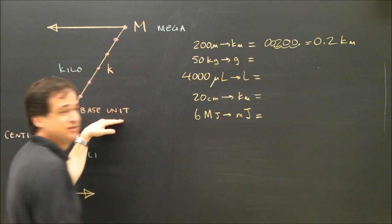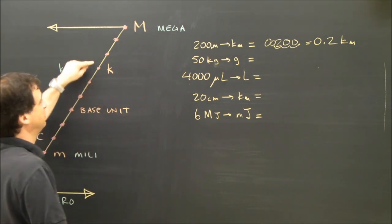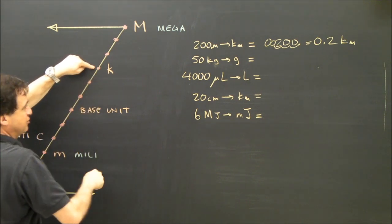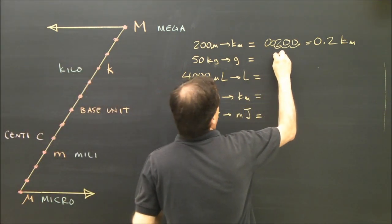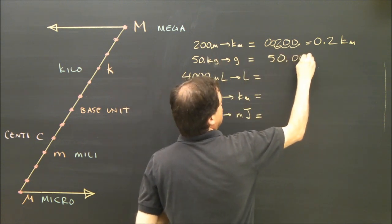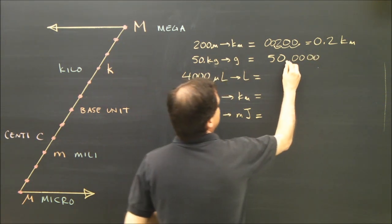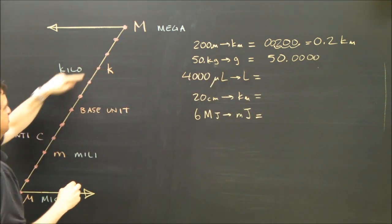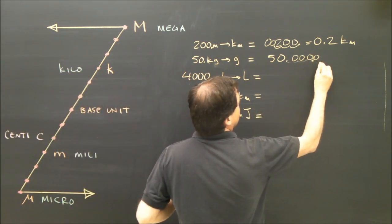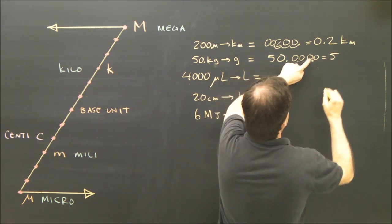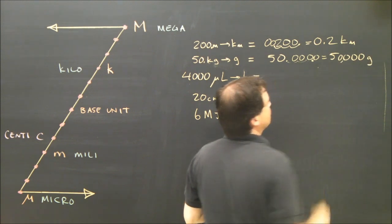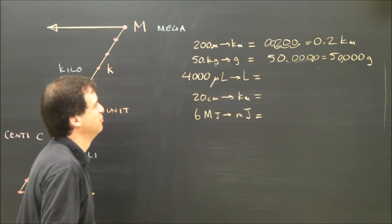Let's try kilograms to grams. Grams is the base unit, and I want to go from kilo down to grams, so that's three steps down — the decimal moves three places to the right. Starting with 50, the decimal is after the 50. Moving three to the right and adding zeros gives 50,000. So 50 kilograms is 50,000 grams.